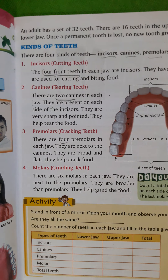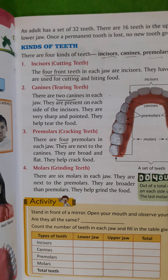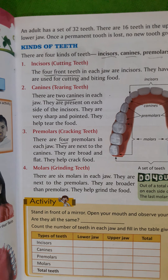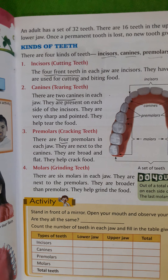So, from the picture you can see: incisor is the cutting teeth, canine is the tearing teeth, premolar is the cracking teeth, and molar is the grinding teeth. These are the four types of teeth that we humans have.